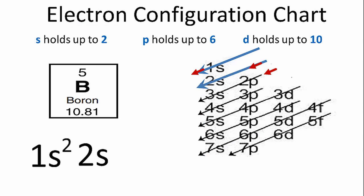Then we'll go down this row right here, 2s. Again, s orbitals can hold 2. We'll put 2 in there, and we've used four of the electrons we have for boron. So we have one more electron.